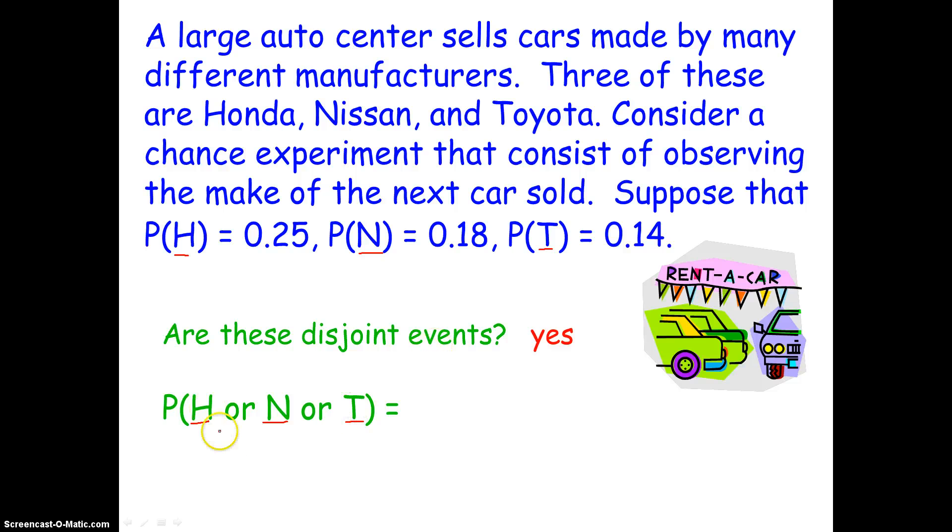And so they want to figure out the probability of someone buying a Honda or a Nissan or a Toyota. Now, because they are disjoint events, the probability of buying one or another or another is simply going to be the sum of those probabilities. That's what we saw back in a couple of slides ago, Rule 3, right? The probability of one or another disjoint event is simply going to be the sum of the probabilities. And that's what they've done here. So the probability of purchasing a Honda, Nissan or Toyota next is 0.57. We just summed up all the individual probabilities.